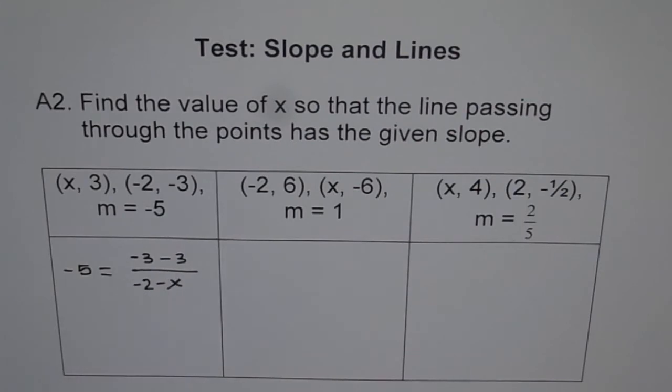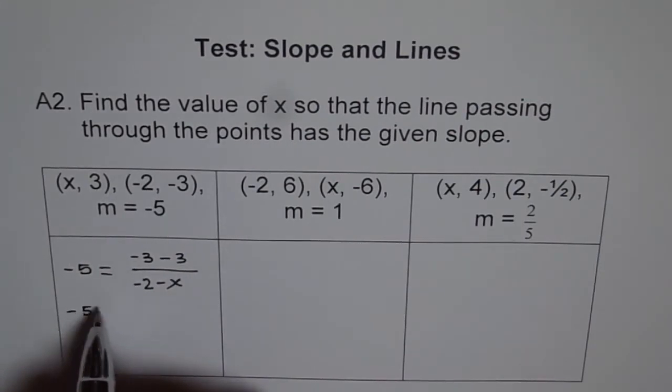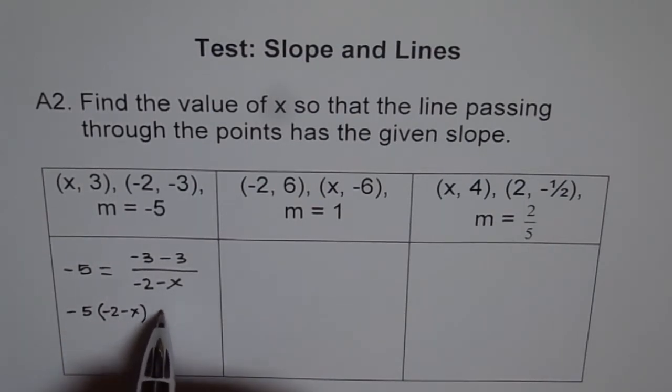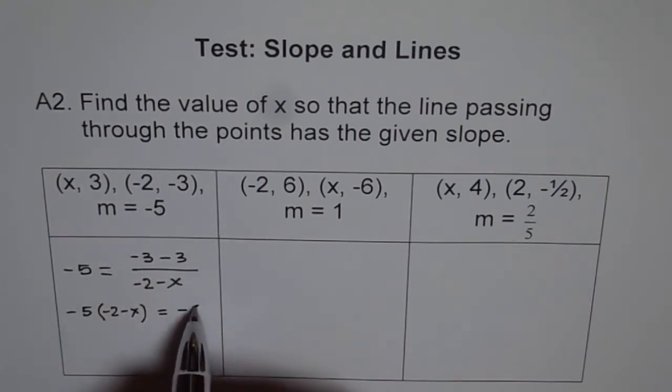Now we will cross multiply and solve. In this case, minus 5 times minus 2 minus x equals minus 3 minus 3, which is minus 6.